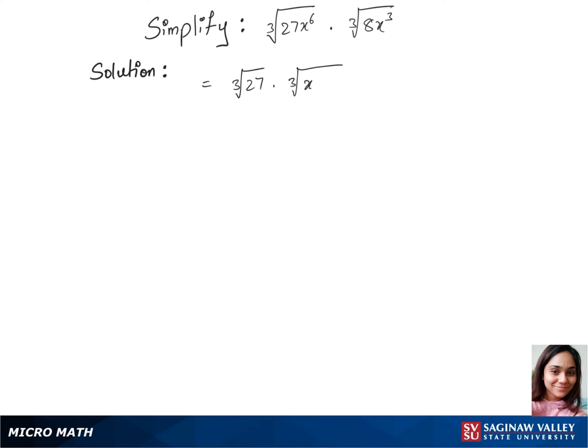We'll write this as x to the power of 3 times x to the power of 3. Together it's x to the power of 6 times cubic root of 8 times cubic root of x to the power of 3.